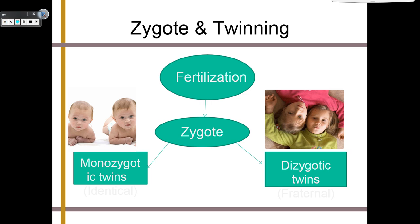Now we need to talk about zygotes and twinning. The way a zygote works is that you have an egg and a sperm, the two combine to form a zygote, and then the zygote starts dividing and multiplying. Usually all of these cells dividing within the zygote will form a single organism. But sometimes zygotes keep dividing to the point where they actually split into two separate individuals that came from the same zygote. When this happens, we call them monozygotic twins — you might know them as identical twins.